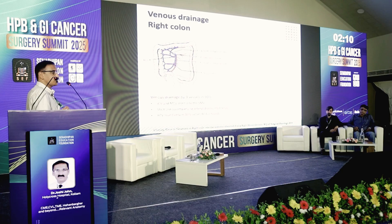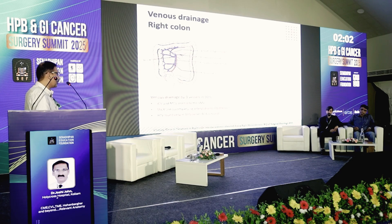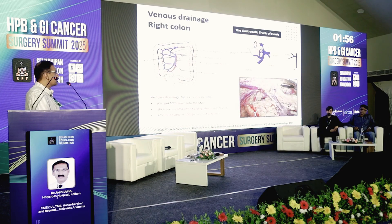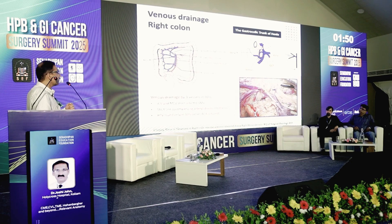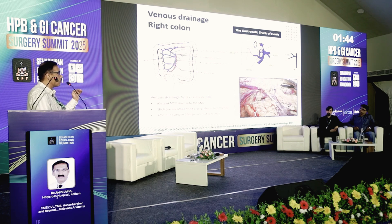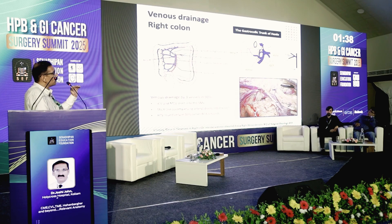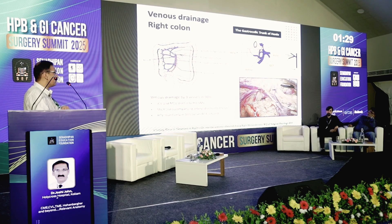With regard to venous drainage, it is by three vessels: the ileocolic and the middle colic, which drain through the superior mesenteric vein, and the superior right colic vein, which drains through the gastrocolic trunk into the superior mesenteric vein. Like the right colic artery, the right colic vein is present only in around 10% of patients. It is important to recognize the gastrocolic trunk of Henle, which is an important venous structure especially when doing right hemicolectomies. It drains from the stomach via the right gastroepiploic vein, from the pancreas via the anterosuperior pancreaticoduodenal vein, and from the colon via the superior right colic vein — all joining to form the gastrocolic trunk of Henle, which is only around one centimeter in length and joins the upper part of the superior mesenteric vein.